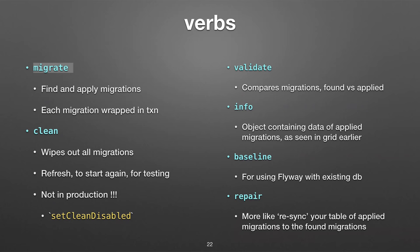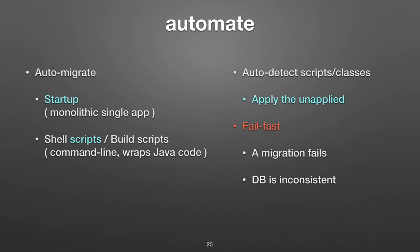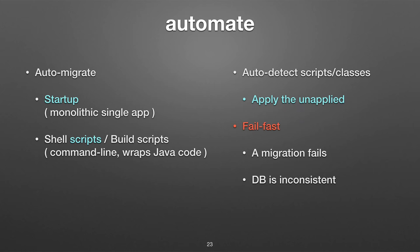You can at the command line just type 'migrate' and it'll do the usual work. Besides the command line, if you have a monolithic app — which is what I'm always doing — and there's a startup hook in your app, you can make the call to invoke Flyway when the app starts up. The other way is through shell scripts and build scripts that are wrapping the Java code — you don't have to worry about Java. Flyway is designed to fail fast by design: if there's a problem, Flyway will not try to continue onward. It will stop running further scripts. That's one of the differences with Liquibase, which has options to keep going if a script fails.